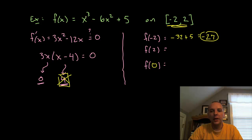Plug in a two. Two cubed is eight. Two squared is four, four times six is twenty four. Eight minus twenty four would be negative sixteen. Negative sixteen plus five would be negative eleven. And we plug in zero. Zero minus zero plus five is five.